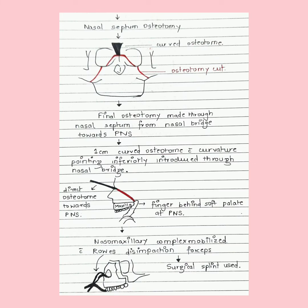The final osteotomy — the nasal septum osteotomy — is made through the nasal septum, from the nasal bridge towards the posterior nasal spine. A one-centimeter curved osteotome with the curvature pointing inferiorly is introduced through the nasal bridge and directed towards the posterior nasal spine. A finger is placed behind the soft palate at the PNS. Then the nasomaxillary complex is mobilized with Rowe's disimpaction forceps.